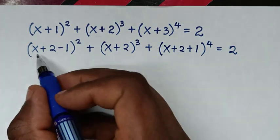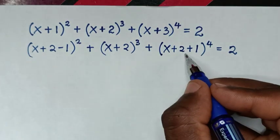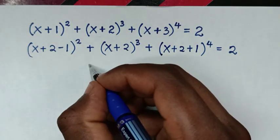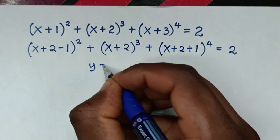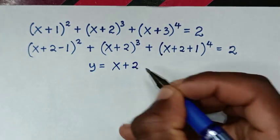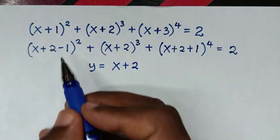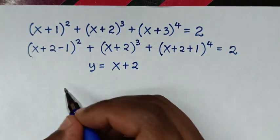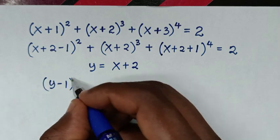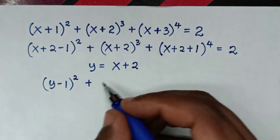From here, (x+2) is common throughout. So we let y = x+2. Then it becomes (y-1)² + y³